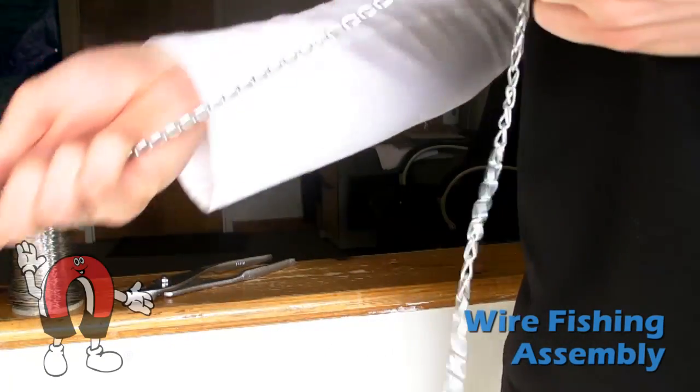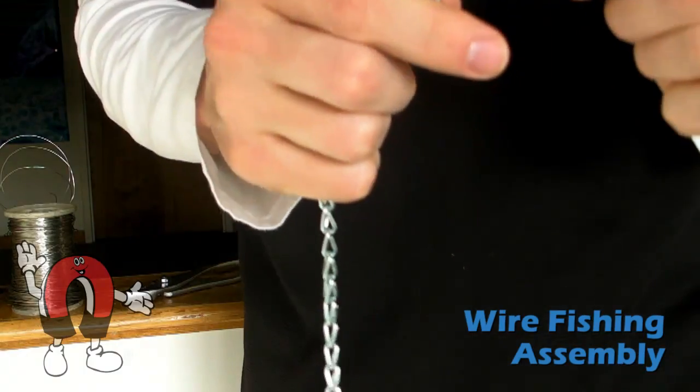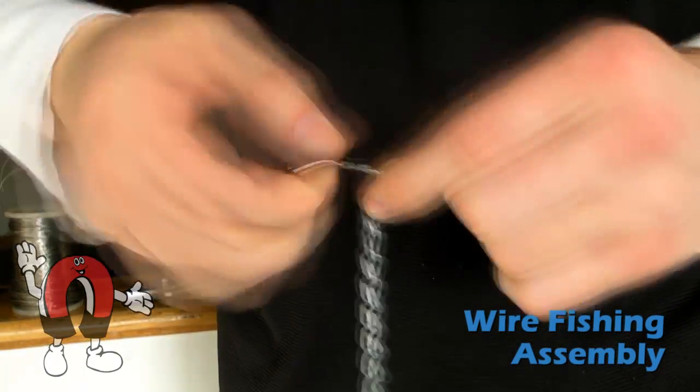Next, we attach the other end of the wire to the pull chain, making sure it is secure. We like the idea of using a wire because it has a higher breaking point than string.